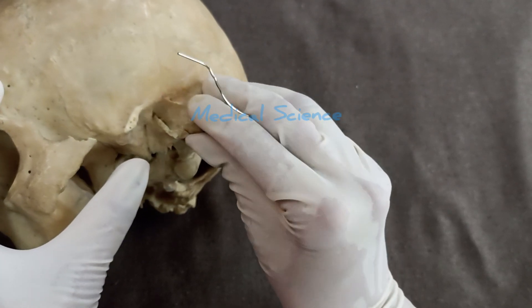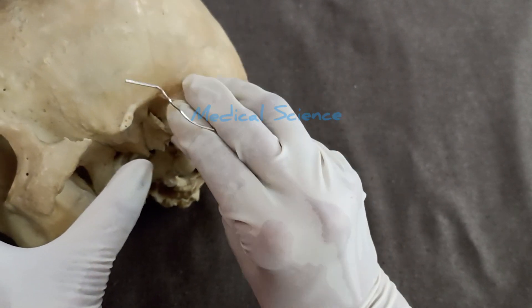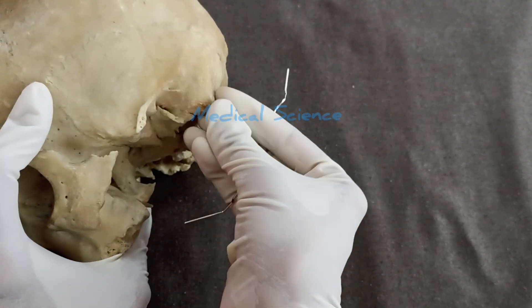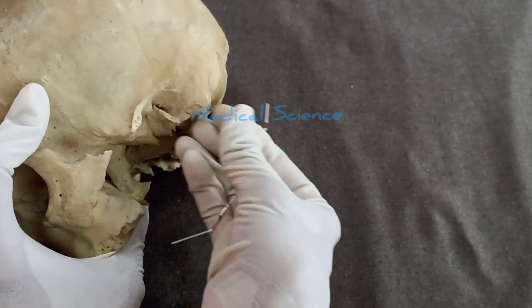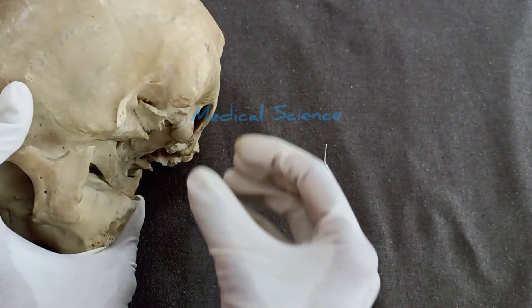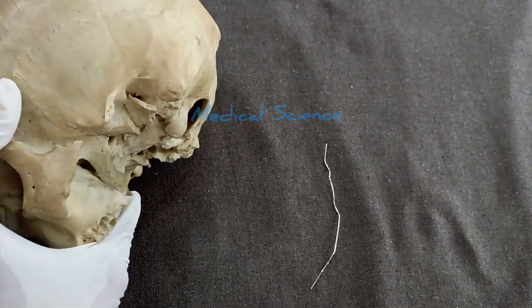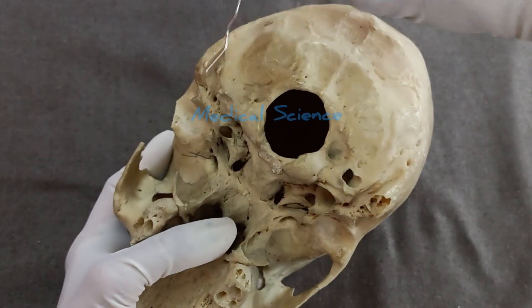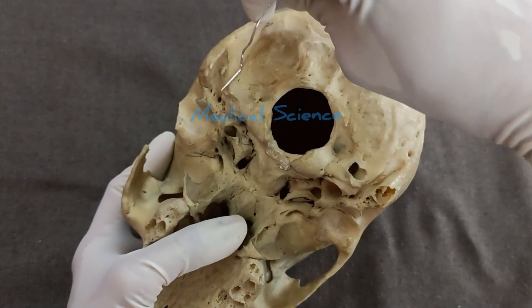The mastoid process develops when the child starts holding its head through the pull of sternocleidomastoid muscle. The inner surface of this mastoid process has a notch which is known as the mastoid notch, and this notch gives attachment to the posterior belly of digastric muscle, which is a muscle of the second branchial arch.